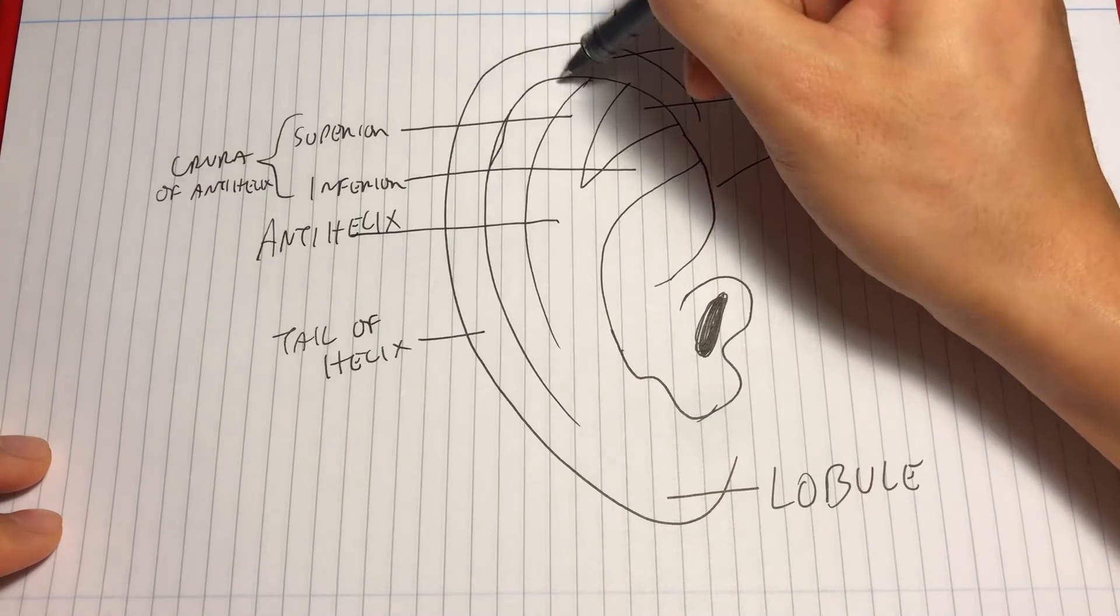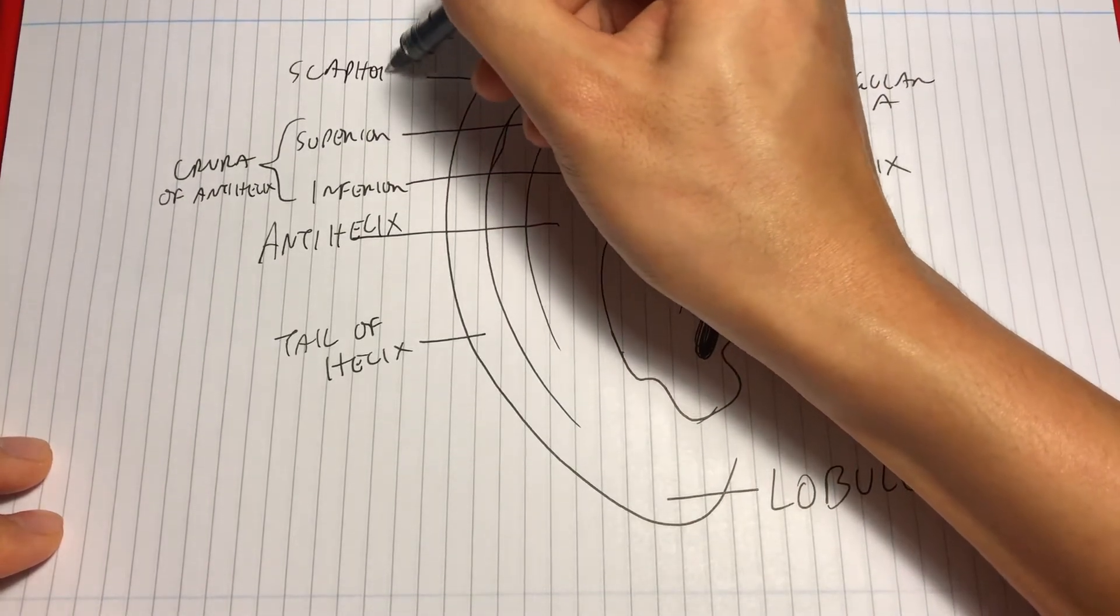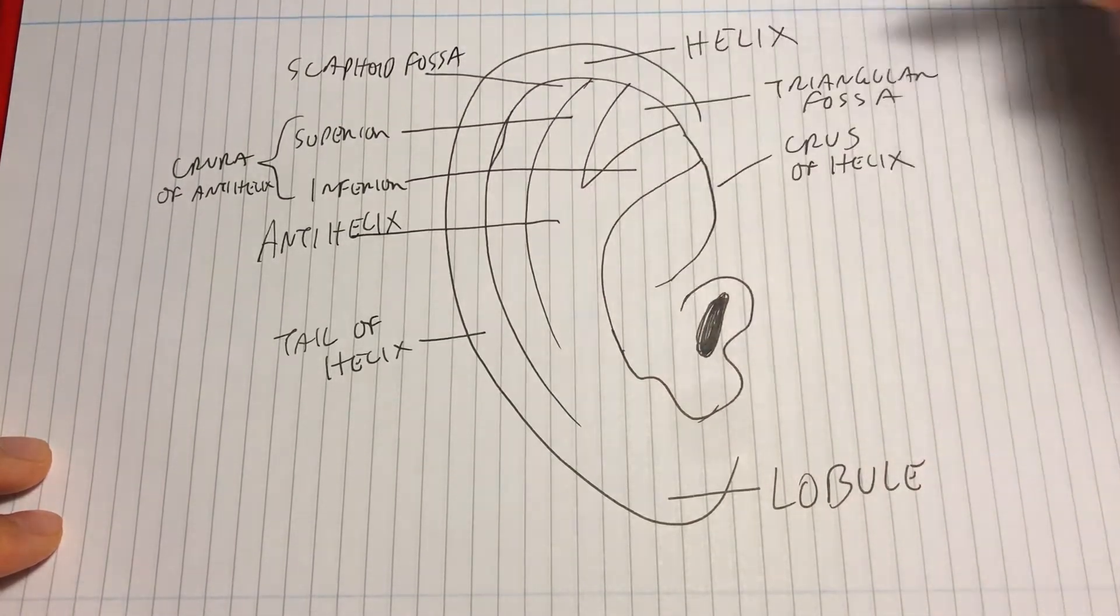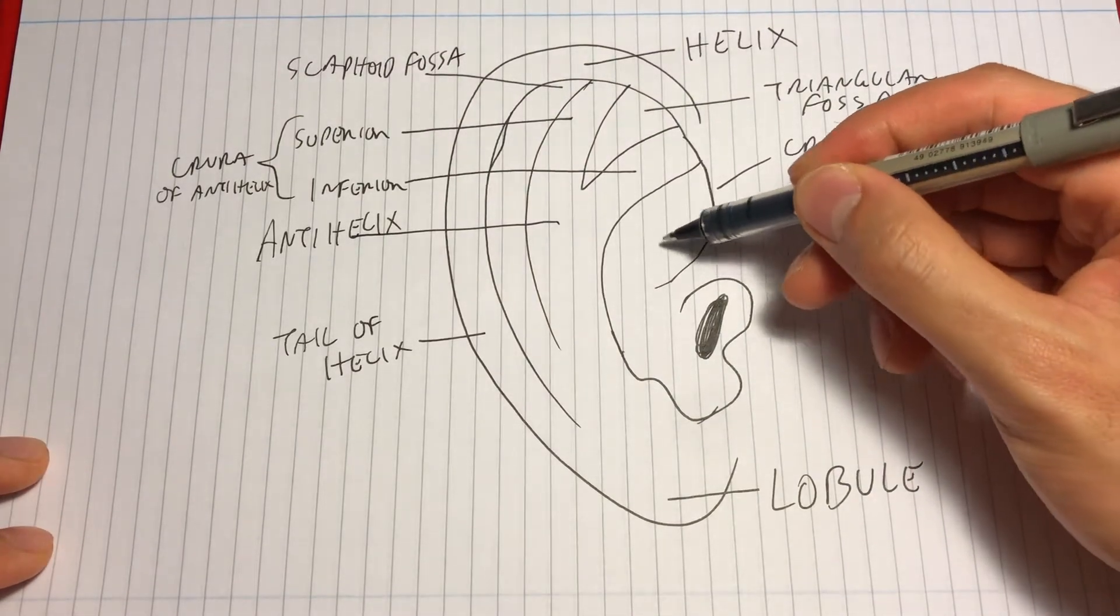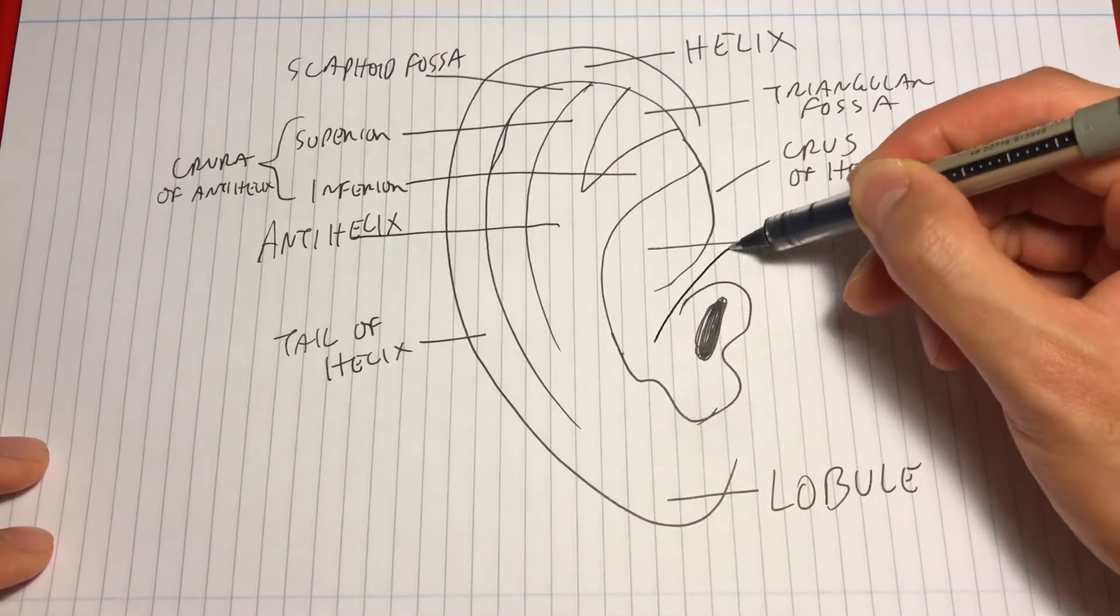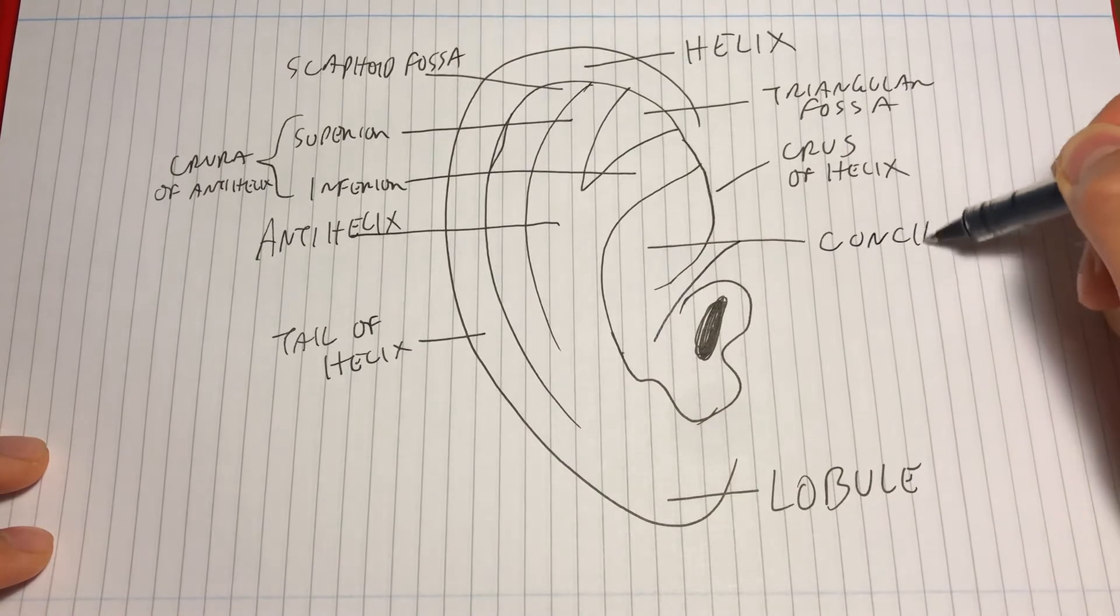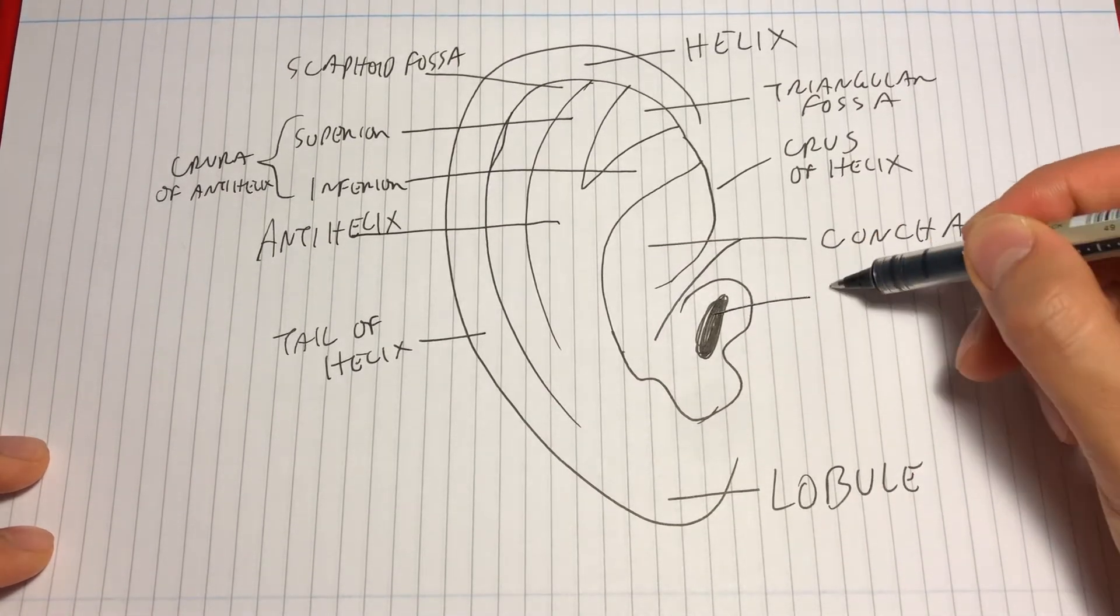Looking closer to the external meatus, you have the concha, which forms a shape similar to a shell. You have the external acoustic meatus, which then passes to the middle and inner ear.